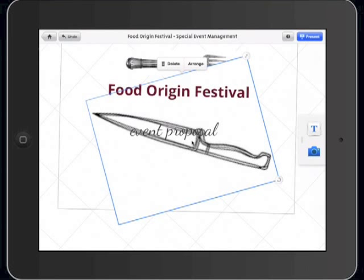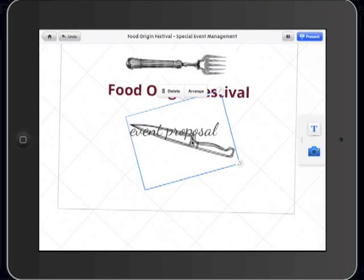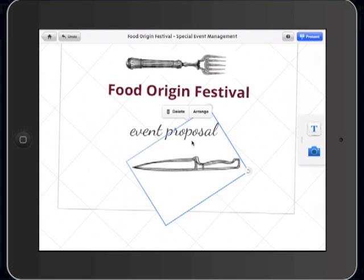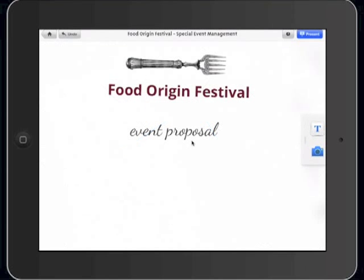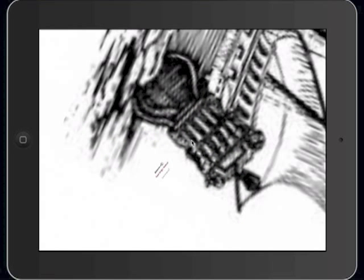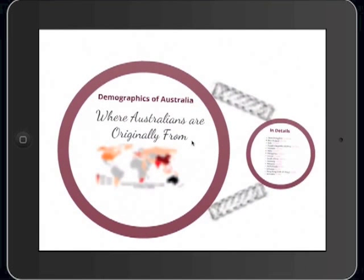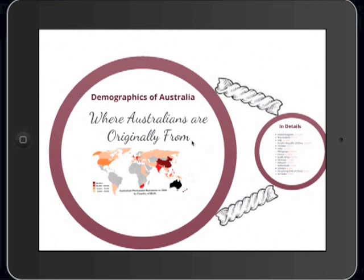Now we're gonna make it smaller and drag it here. Using the Arrange tool, we can send it back or bring it to the front — you can see what a change that makes with respect to the text box. Then we can use the present button in order to see our Prezi. Have fun zooming in and zooming out with the brand new Prezi app. Thank you, and check my channel for other reviews.